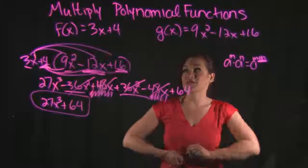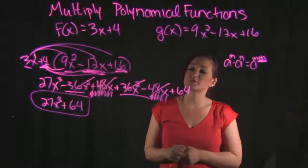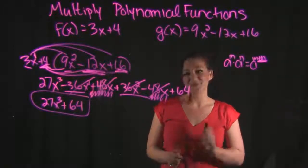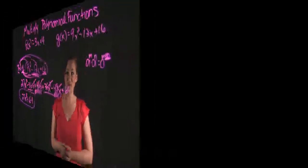So our final answer is 27x cubed plus 64, and that is how you multiply polynomial functions by distributing. That's it for this video.